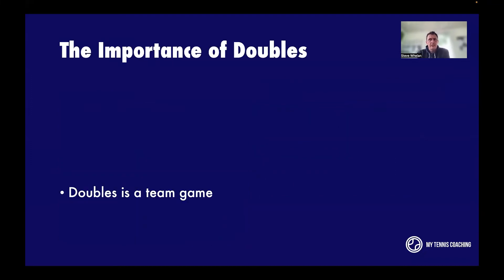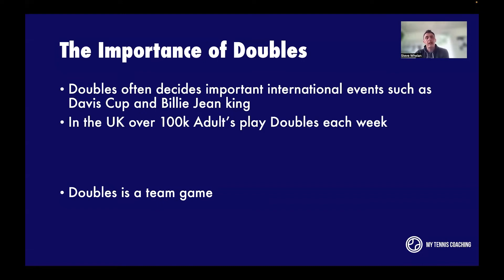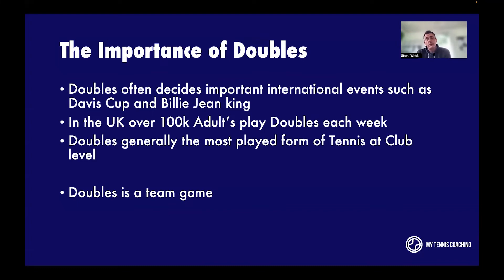On the importance of doubles: doubles is a team game, but people generally play doubles as four individuals — they play mainly as individuals rather than as a team. Doubles is also very important for international events such as the Davis Cup and the Billie Jean King Cup, formerly the Fed Cup. Here in the UK, over 100,000 adults each week play doubles. Club life in the UK is very much all about doubles, with very little singles play due to court pressure and the perception that doubles is easier in terms of movement.